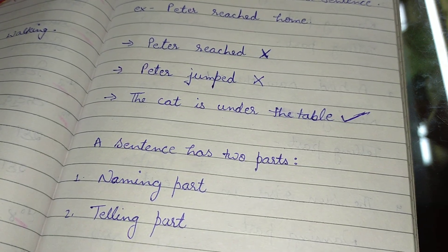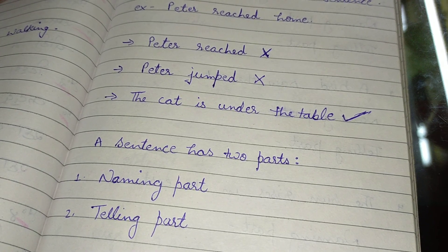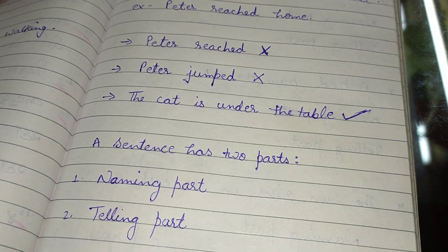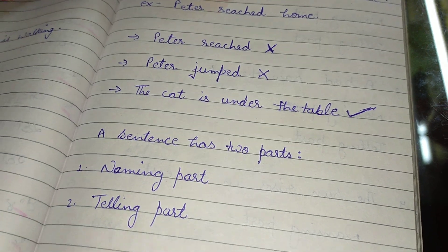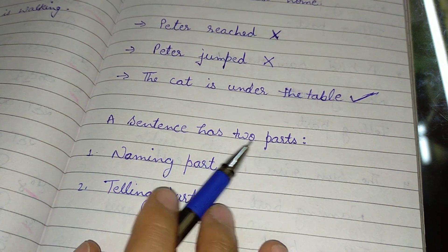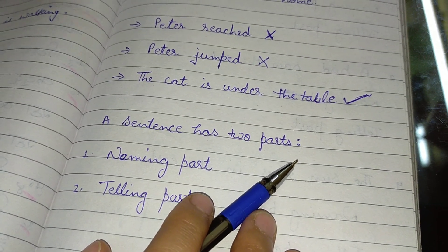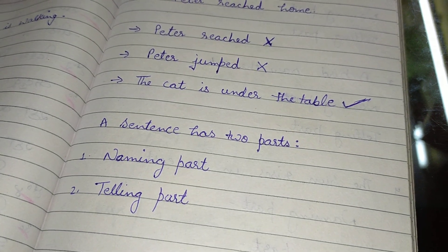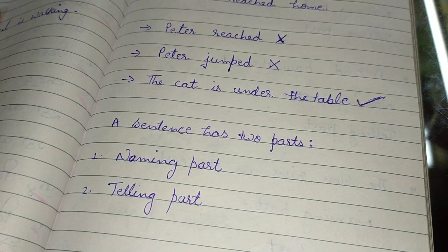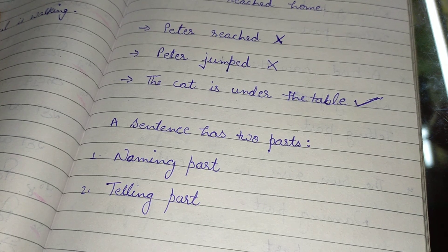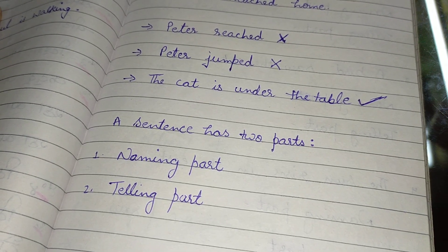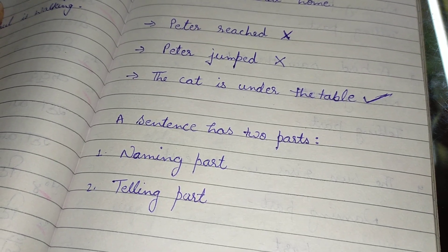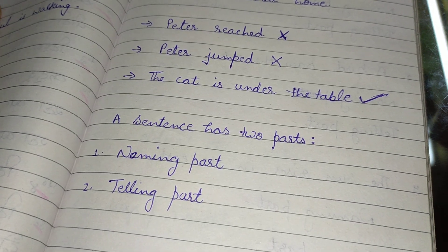You should learn to make small, small sentences. By using small words you can write sentences yourself, like 'my name is,' 'my hobby is' — these are small sentences you can start with. We need to know that a sentence has two parts. Before writing a sentence we should know: first is the naming part and second is the telling part. The naming part is the person who is doing the action — the boy, the cat, the dog, Rahul — whoever's name comes.